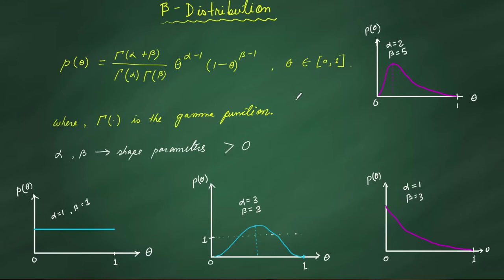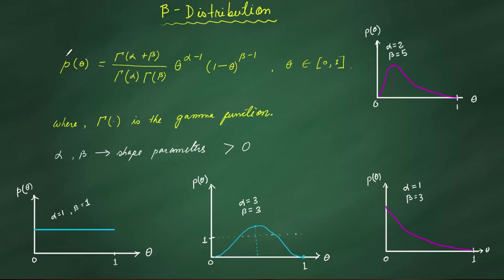Before learning about Thompson Sampling, we have to learn about something called beta distribution, because we will be using this distribution when we do Thompson Sampling. You can see the expression of beta distribution — it has two parameters called shape parameters, those are alpha and beta. You can tune these alpha and beta parameters to have a specific shape of the beta distribution.